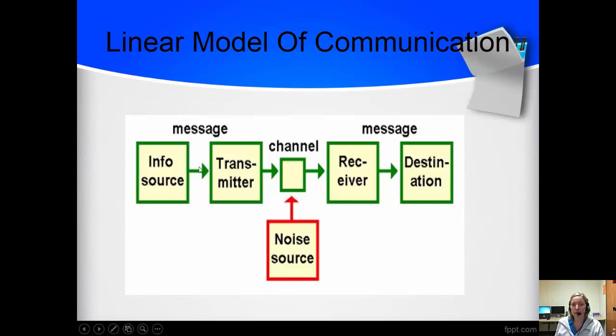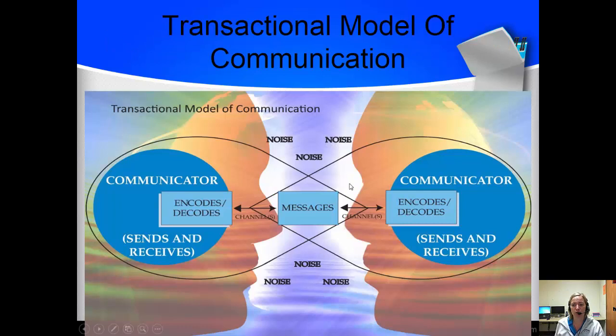So we want a model that shows that. And we have the transactional model. The transactional model shows both of us sending and receiving messages, encoding and decoding those messages, having noises happening along with multiple channels of communication. So it shows these elements working together. And this is important because this is what you're going to be producing with your communication model assignment. You are going to be showing me a transactional model between you and one other person.